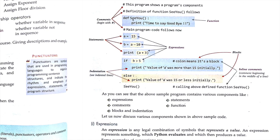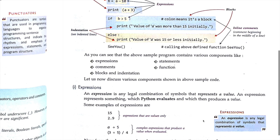Here we have a function defined with 'def' — this is a function that contains a print statement like 'print time to say goodbye'. Then the main program code follows: a = 15, b = a - 10, print(a + 3). If b is greater than 5, it will print 'value of a was more than 15 initially'. An if-else statement has been used. This is just giving you a rough idea about the program structure; everything will be discussed in detail later.